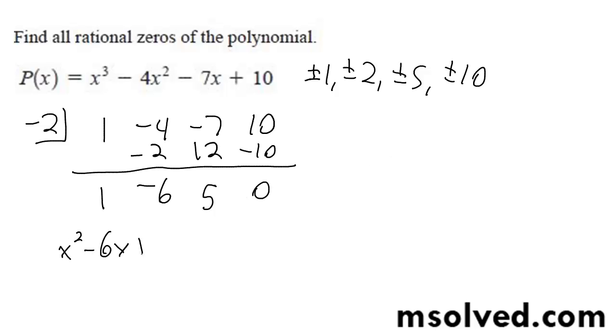So x squared minus 6x plus 5, I get x minus 5, and then x minus 1.